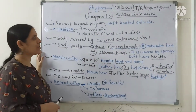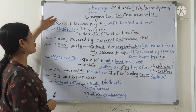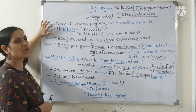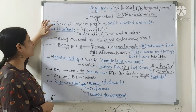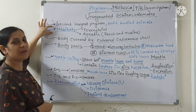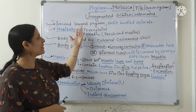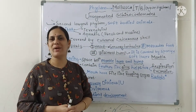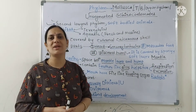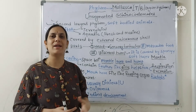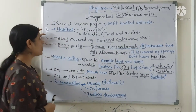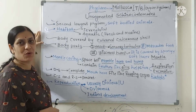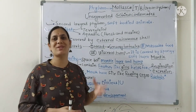They belong to the second largest phylum and are soft-bodied animals. Regarding habitat, some are terrestrial and some are aquatic — staying both in marine and in freshwater environments. Their body is covered by a specialized covering.